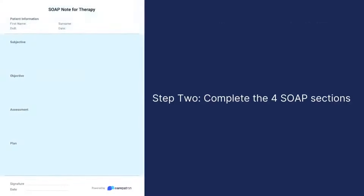The next step involves filling out all four SOAP sections using an evidence-based approach. Make sure you comment on each of the subjective, objective, assessment, and plan sections.